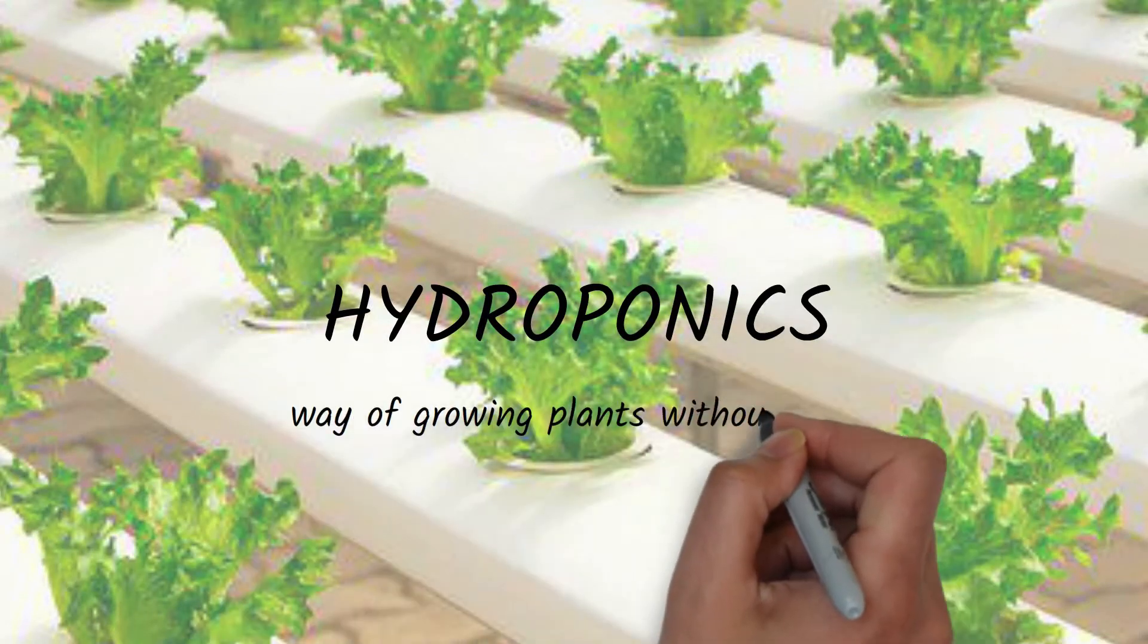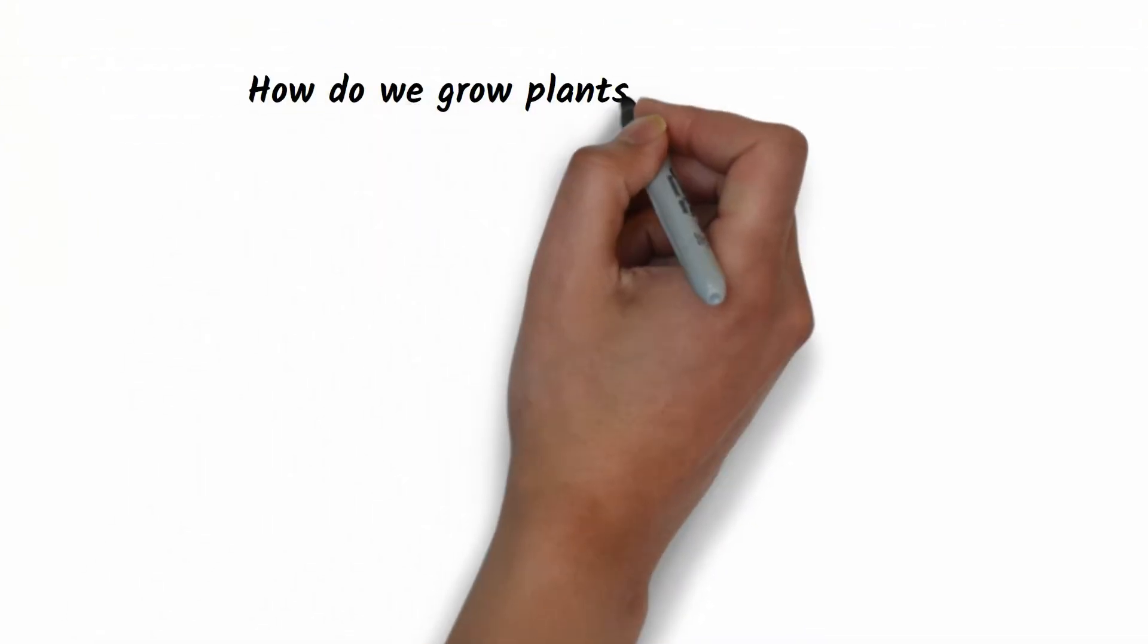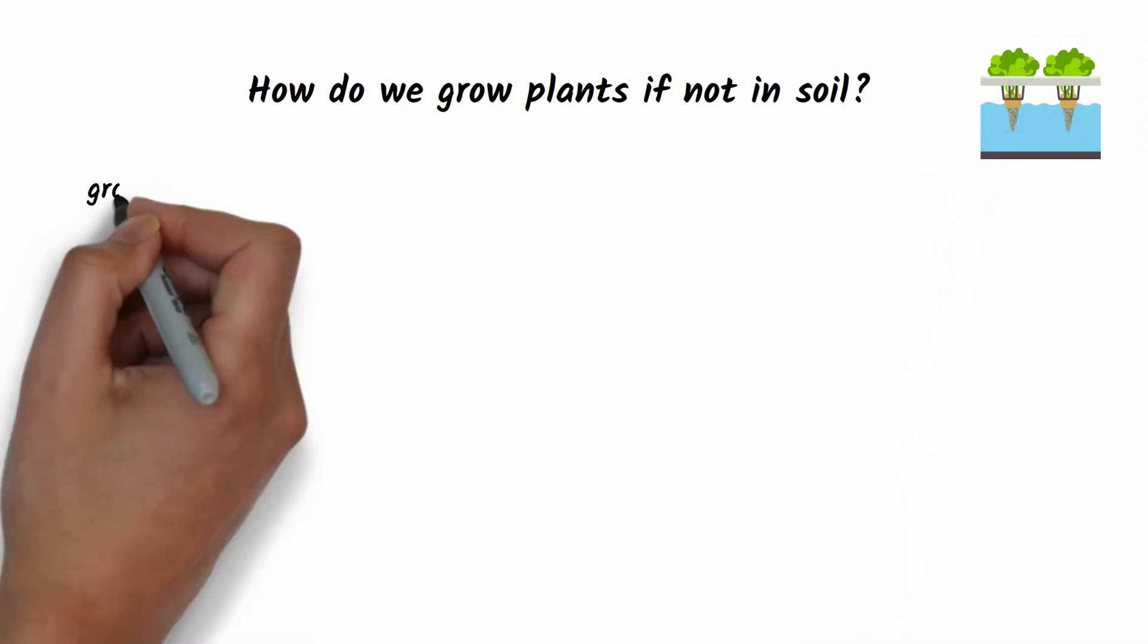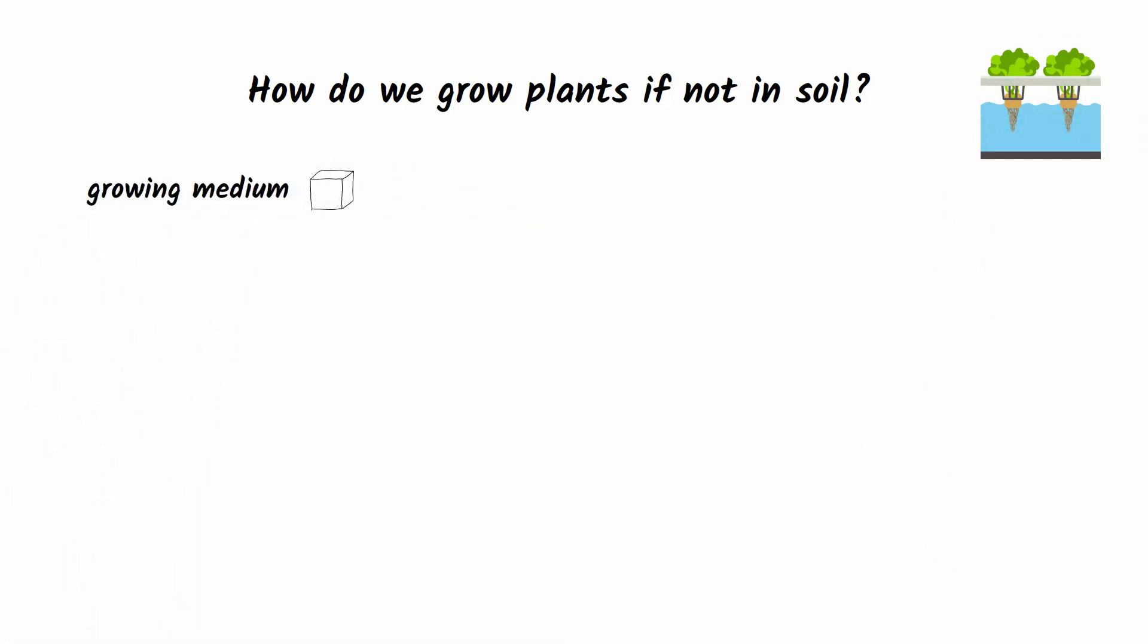In this video we introduce hydroponics, a way of growing plants without soil. So how do we grow plants if not in soil? Simply, all we need for such growing is a plant, a growing medium to hold the plant in the pot, a nutrient solution, and water.